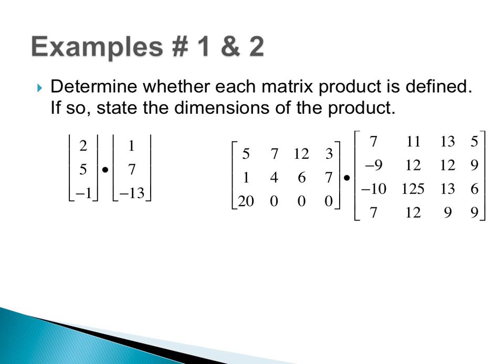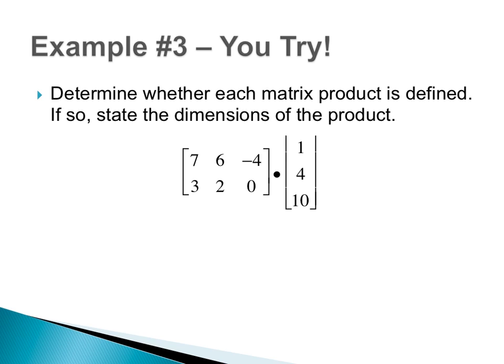Here's an example for you to try. Pause the video, write down the dimensions of the two matrices, and determine if it is possible to multiply them. If it is, tell me the dimensions of the product. The first matrix is two by three. The second one is three by one. These match, so yes, it is possible to multiply the matrices. The product will be two by one.